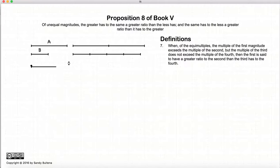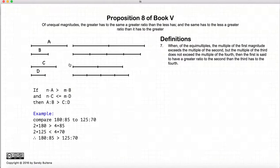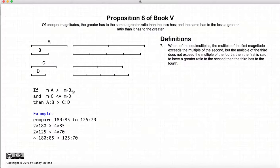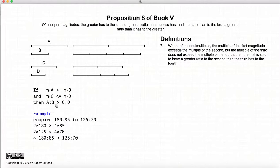The other definition that is also part of this proposition and is very important is the definition of what makes one ratio larger than another. So what does it mean when we say that A to B is greater than C to D? Well, what it means is: can we find two numbers such that N times A is greater than M times B, and N times C is less than or equal to M times D? If we can find two numbers N and M such that this condition holds true, then A to B is greater than C to D.